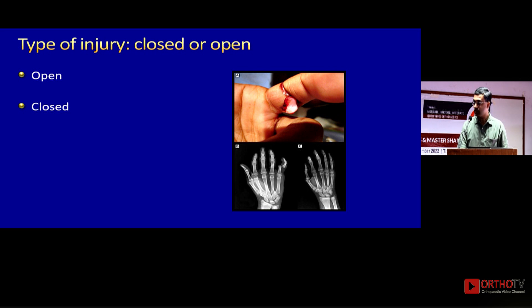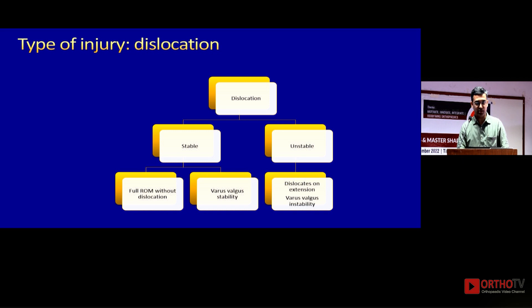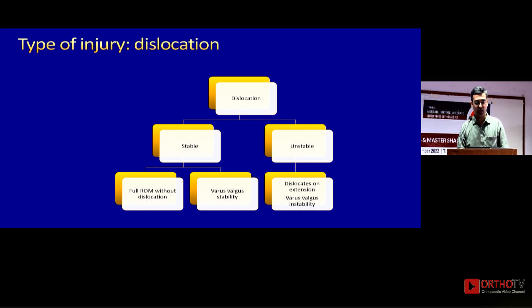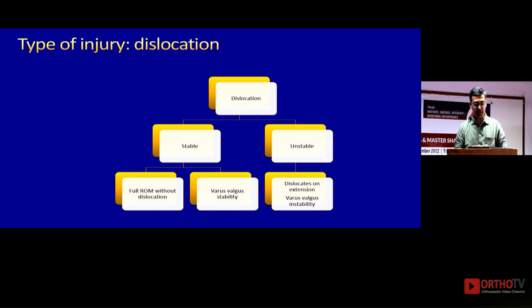When you see an open injury, it needs early intervention — don't delay it, it's like any other open fracture or open fracture dislocation. It's the closed injury that usually ends up being mistreated or untreated. For a simple dislocation that you reduce, the treatment plan depends on whether the joint is stable or unstable after reduction. Stable means the patient can completely bend and extend without dislocating, and there is no medial-lateral or varus-valgus instability.